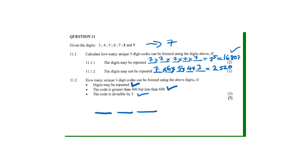The first condition: the code is divisible by five. For a number to be divisible by five, it must end with a zero or a five. Since zero is not in our digit set, the number can only end with a five — so the last position has only one option.